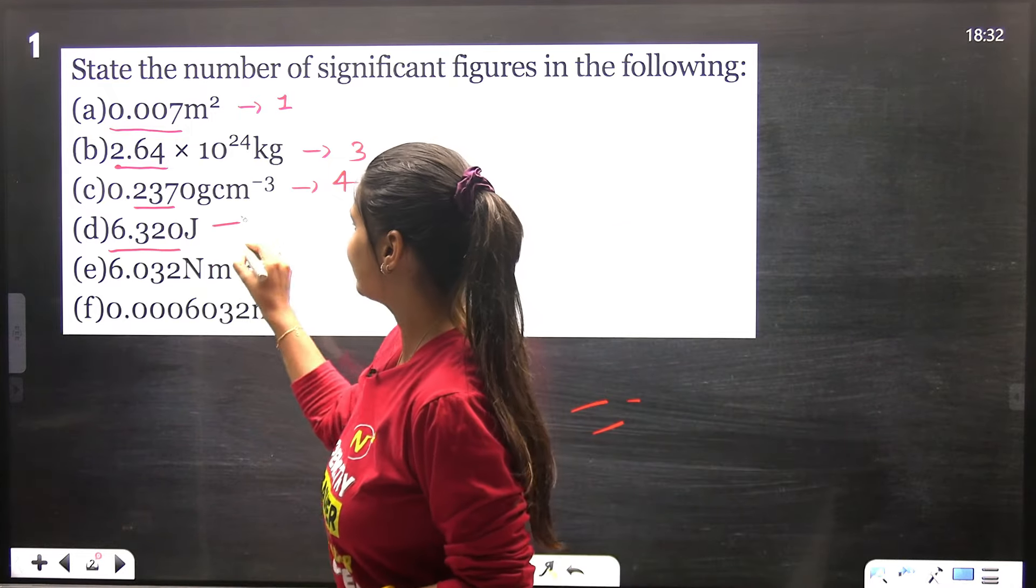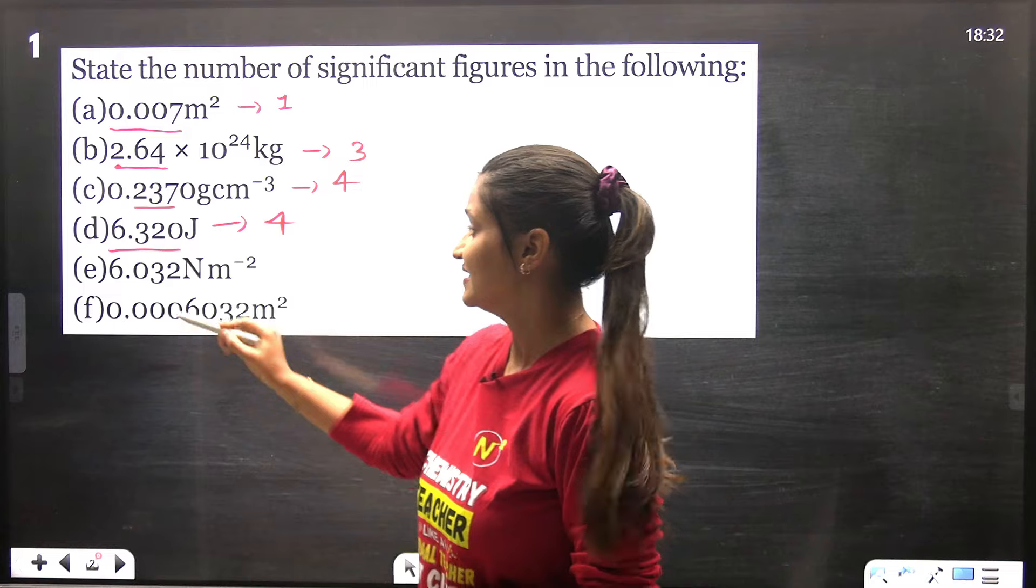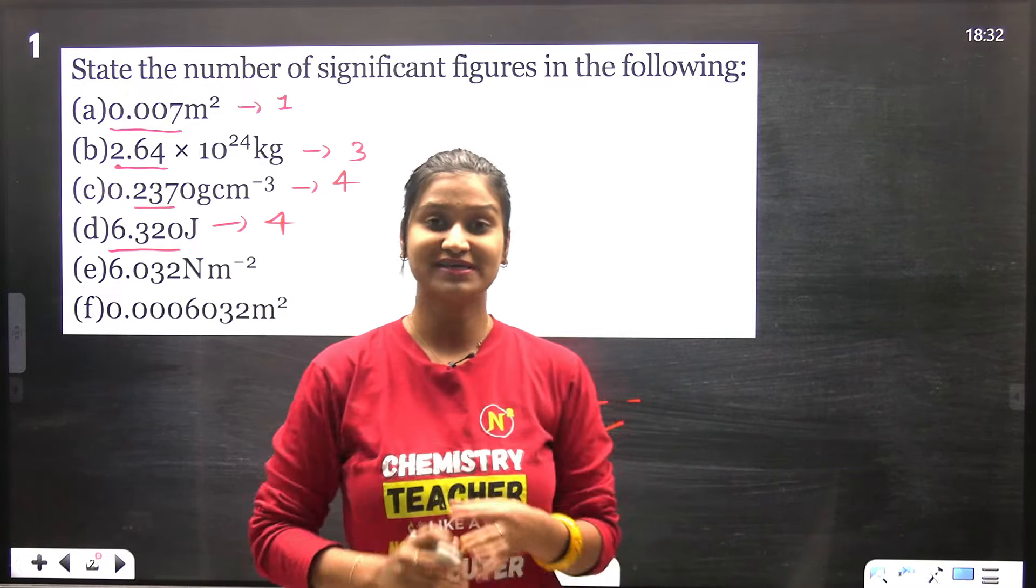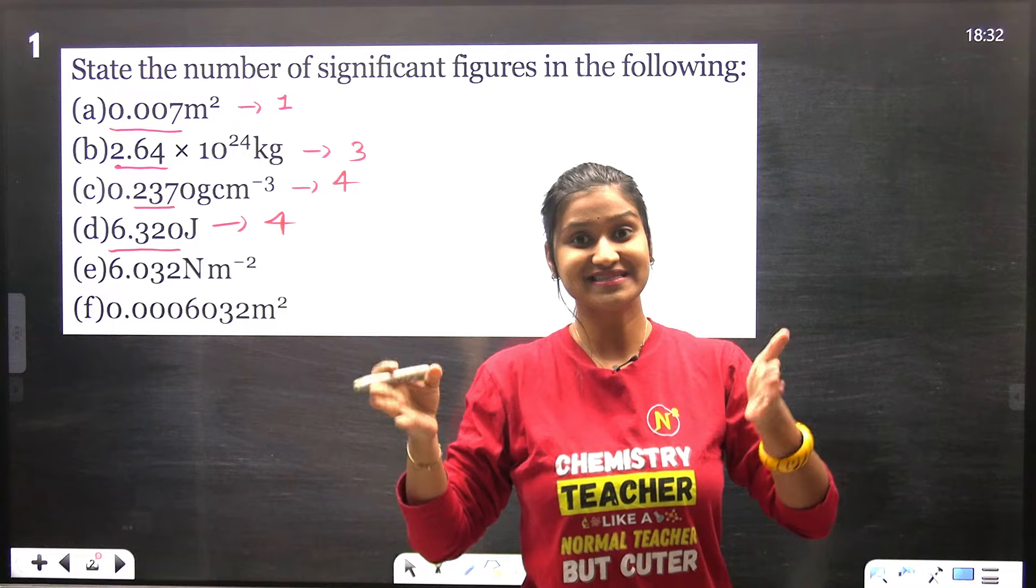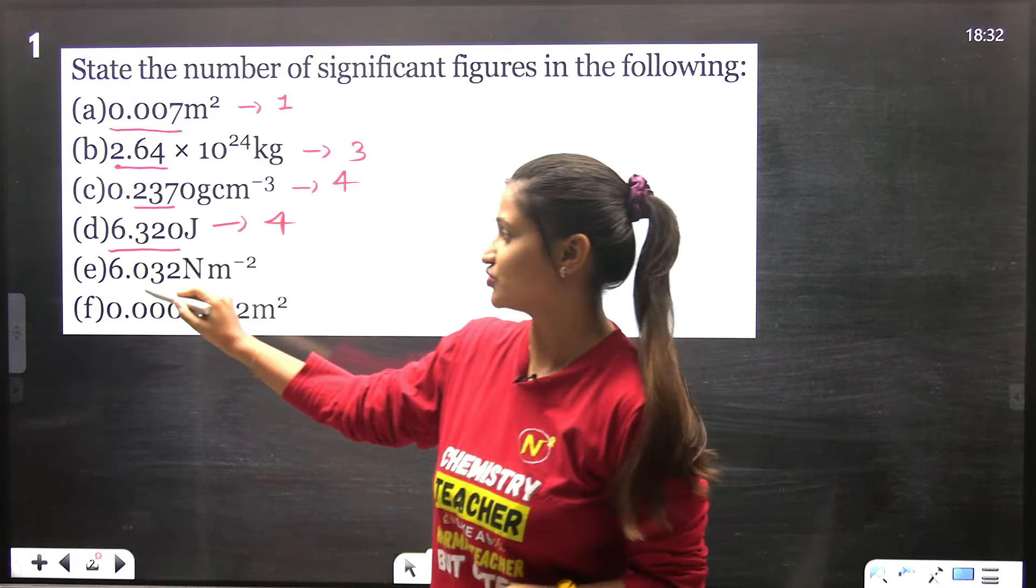Now 0.2370, again it becomes four, all of them are significant. Six point zero three two - if any zero comes between two non-zero digits, it is significant for sure.